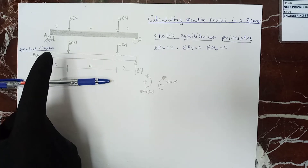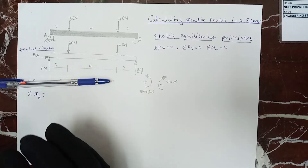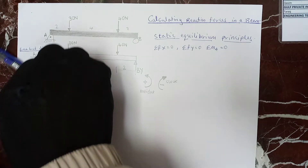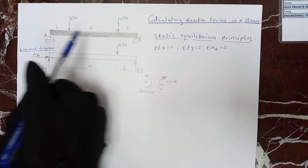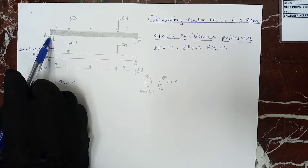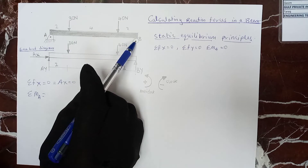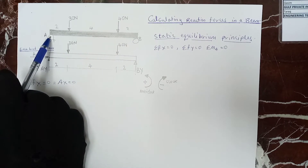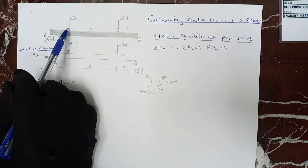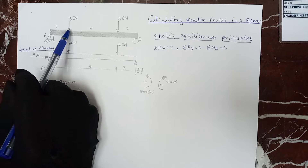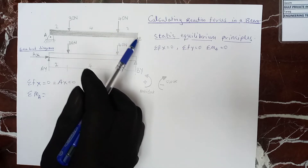We have a beam that is in equilibrium. Equilibrium means it is static — not in motion, not moving. It is in one position. Here we have a beam with a force of 30 Newton and 40 Newton. We have a pin support at A and a scroll support at B. From the pin support, there is a distance of 2 meters to the 30 Newton force, then 4 meters to the 40 Newton force, and then 2 meters to point B.